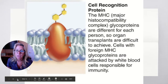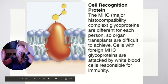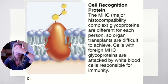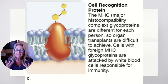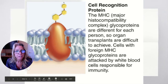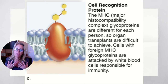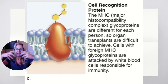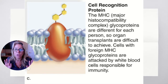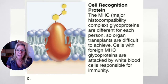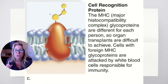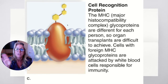Our next function is cell recognition. Remember, cells are blind. In cell recognition, a glycoprotein can help with cell recognition, and glycolipids can help as well. Glycoproteins in particular are involved in your immune system — recognizing self from non-self. Because if something gets in your body that doesn't belong to you, your body is going to want to attack it.